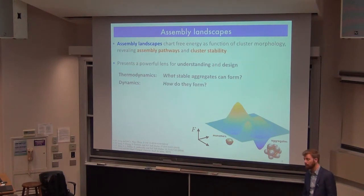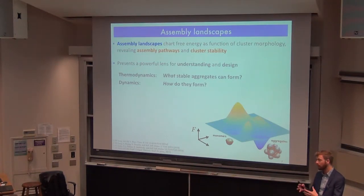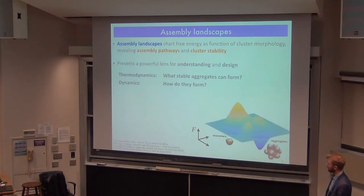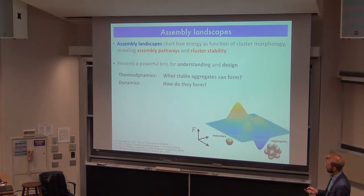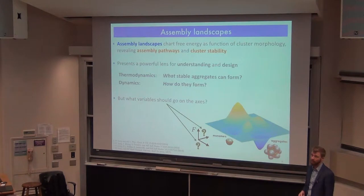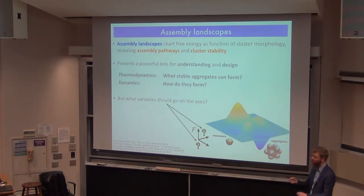One way of approaching this is through assembly landscapes. If you're familiar with protein folding landscapes — a landscape that maps out the configurational phase space the protein can live in as a function of its free energy — an assembly landscape is just a many-body generalization of this. The coordinates are descriptors of how the system is arranged in space, capturing many-body interactions between building blocks. This embeds both the thermodynamics and, if you pick your variables correctly, the dynamics and assembly pathways.